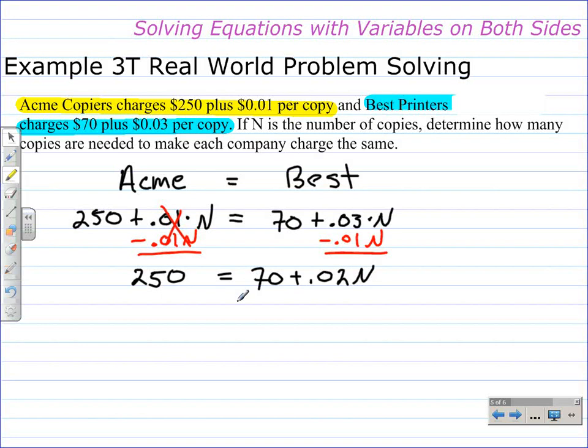Next, we'll subtract 70 from both sides. On the right, the 70s become 0, leaving .02n. And 250 minus 70 is 180.